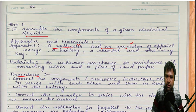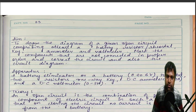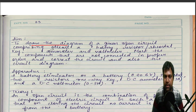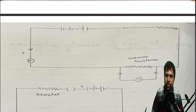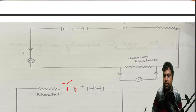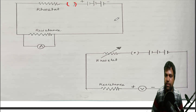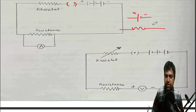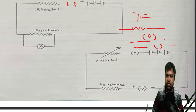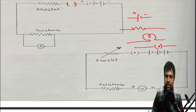Activity number three is to draw the diagram of a given open circuit comprising at least a battery. A circuit will be given and you draw it as an open circuit and a closed circuit. You should know the symbols for each component: battery symbol (plus and minus), resistor symbol, bulb symbol, key symbol. Using these symbols, draw two diagrams — open circuit (key open) and closed circuit (key closed).